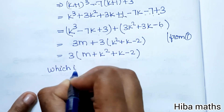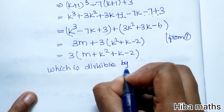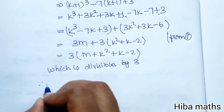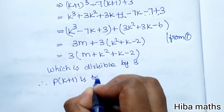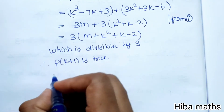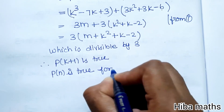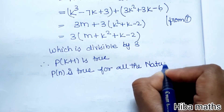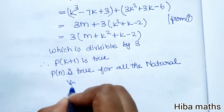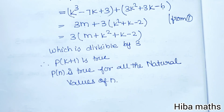The resulting expression is divisible by 3. Therefore, P(k+1) is true. Hence, by the principle of mathematical induction, P(n) is true for all natural values of n. If you have any doubt, please mention it in the comment section. Thank you so much for watching.